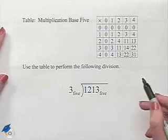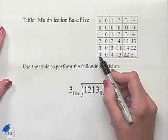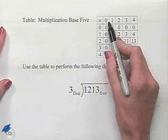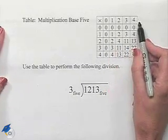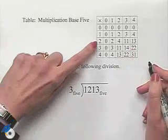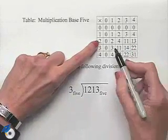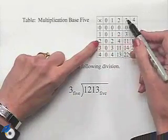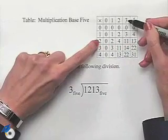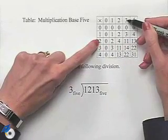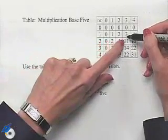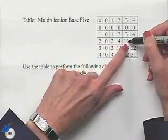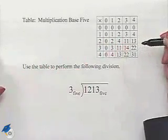To use the table, we notice we have the digits 0 through 4 on our first column and 0 through 4 on our first row. We would take a value in our first column, multiply it times a value in our top row. For instance, we take 2 multiplied times 3 and then go down to where the row and column intersect in order to see that the product would be 1, 1 in base 5.